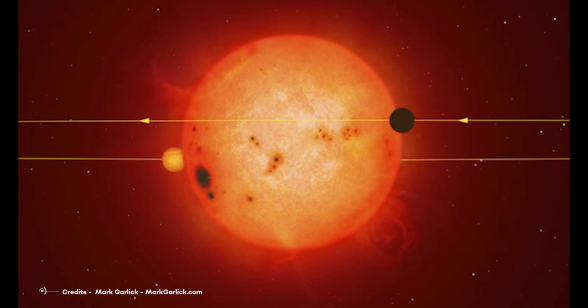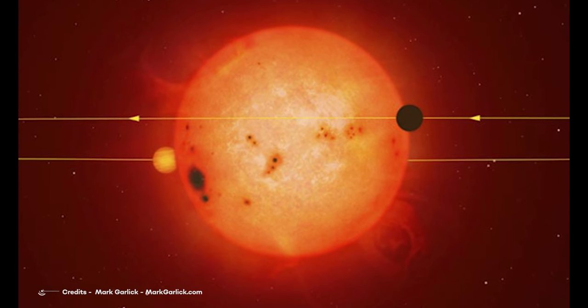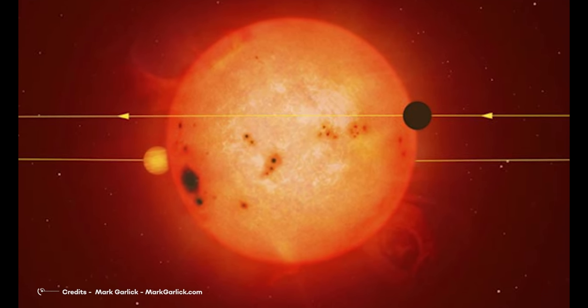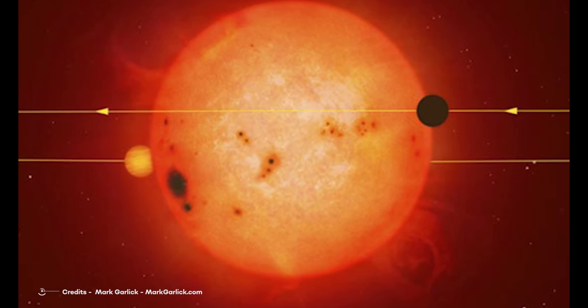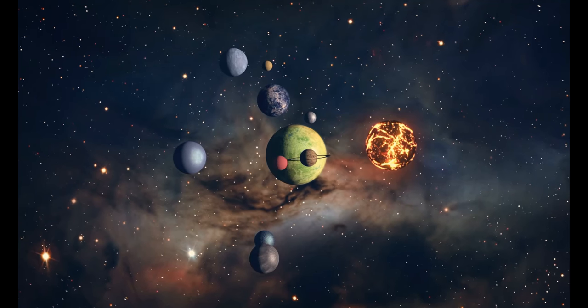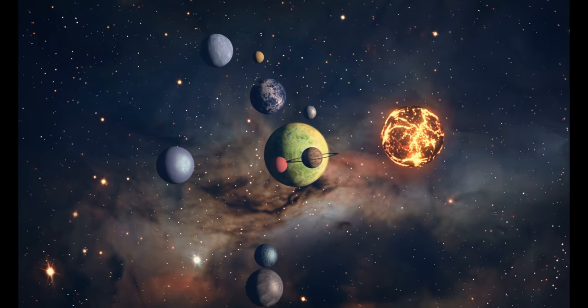That's the speed of a person walking briskly. Such tiny signals could not have been distinguished from simple noise by most of today's available spectrographs. We could say HARPS is a unique planet-hunting machine.